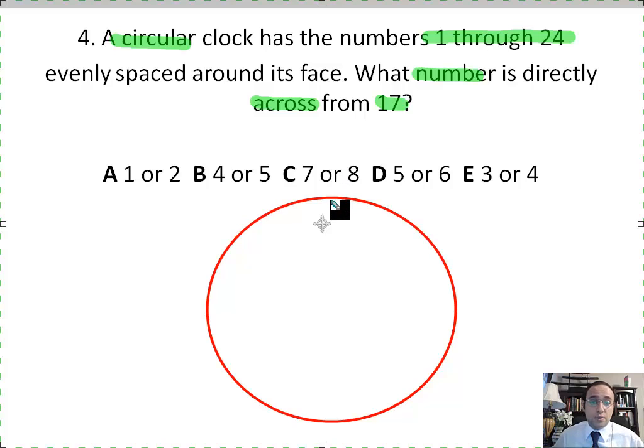So everything is going to be double. So instead of 12, I have 24. And instead of 3 o'clock, I have 6 o'clock. Instead of 6 o'clock right here, I have the double, which is 12 o'clock.